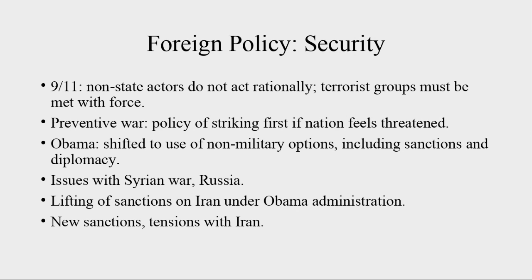President Obama shifted away from this. He preferred to use sanctions and diplomacy first and military last — he didn't want to get involved in another conflict. He had to make an exception for ISIS. We've had some issues dealing with conflicts in Syria and Russia meddling. The Syrian civil war started as an attempt to overthrow the dictator Bashar al-Assad. We intervened to help the rebels, Russia intervened to help Assad stay in power, and into the void stepped ISIS — creating three different factors working in Syria: ISIS-controlled territory, government-controlled territory, and rebel-controlled territory.